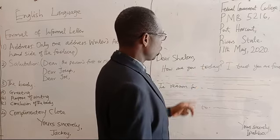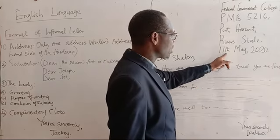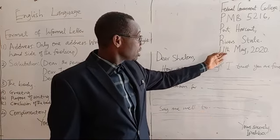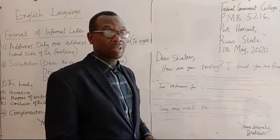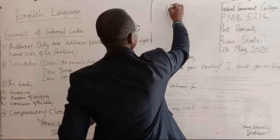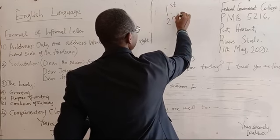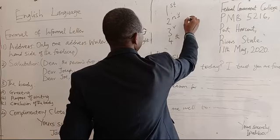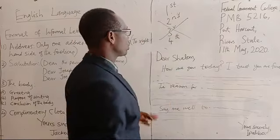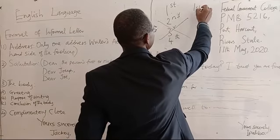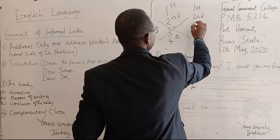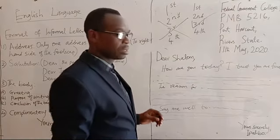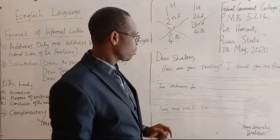If you look at the date, you'll observe that the 'TH' after the 11th is on the same line as the 11th. It is wrong to write ordinals with superscript — like raised 'st,' 'nd,' 'rd,' 'th.' The correct ones are written on the same line: 1st, 2nd, 3rd, 4th — all on the same line. Note this. Very, very important.